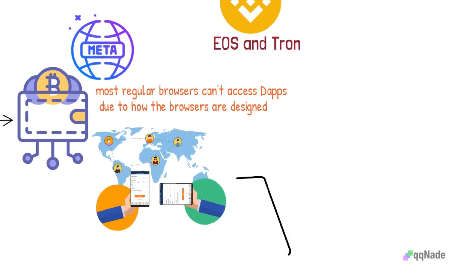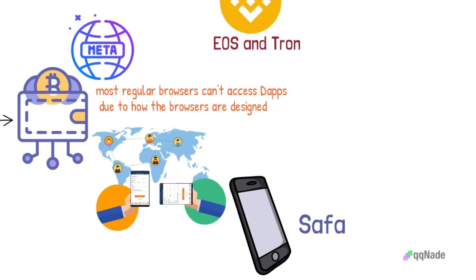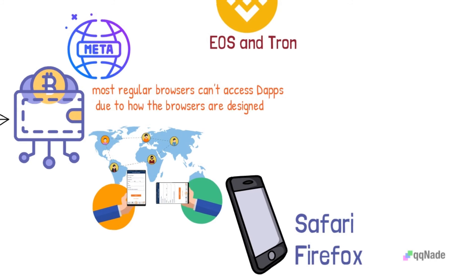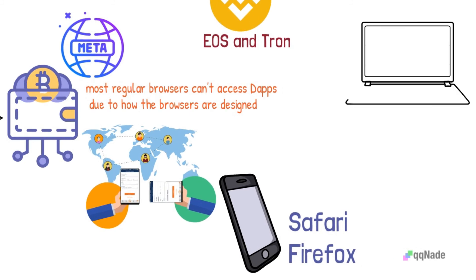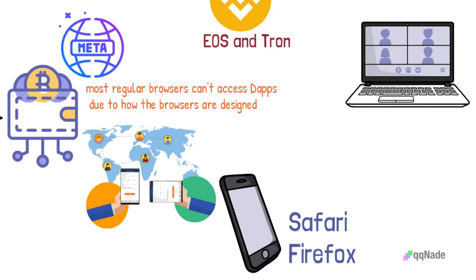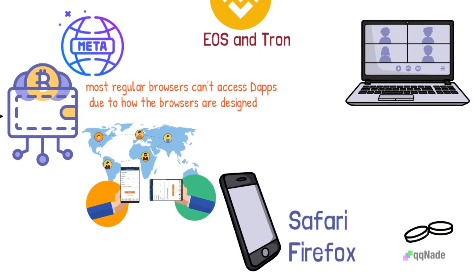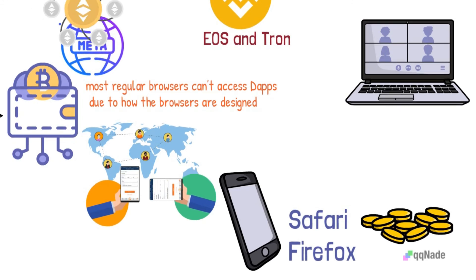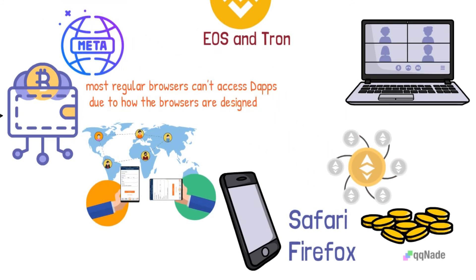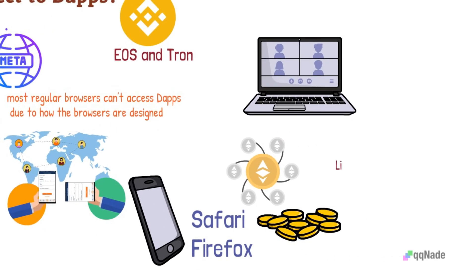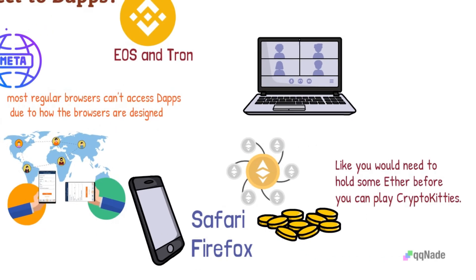However, iPhone users can use dApps directly from browsers like Safari, Firefox, etc. Once you have the dApp browser running, look for the dApp you want to use. To use a dApp, you would need to hold some tokens of the blockchain the dApp was built on. For example, if you wanted to use an Ethereum-based dApp, you would need to hold some Ether in your wallet before accessing the app — like you would need Ether before playing CryptoKitties.